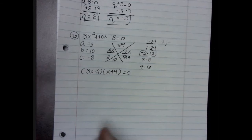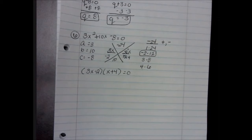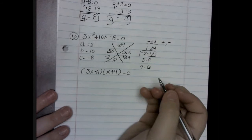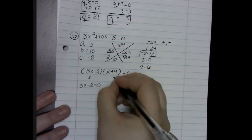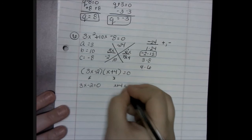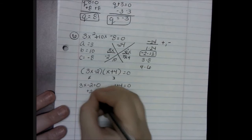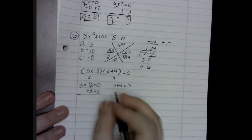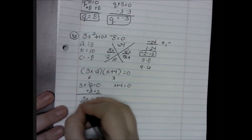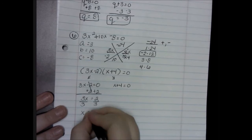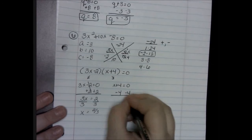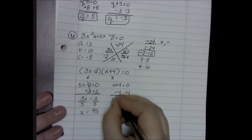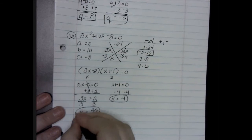Set both equal to 0. All the examples in the book apparently don't like to challenge you, so be wary of that when doing homework and test problems. I have 3x minus 2 equal to 0 and x plus 4 equal to 0. Solving: add 2 to both sides to get 3x equals 2, then divide by 3 to get x equals 2 thirds. And subtract 4 to get x equals negative 4. That is my answer for number 6.